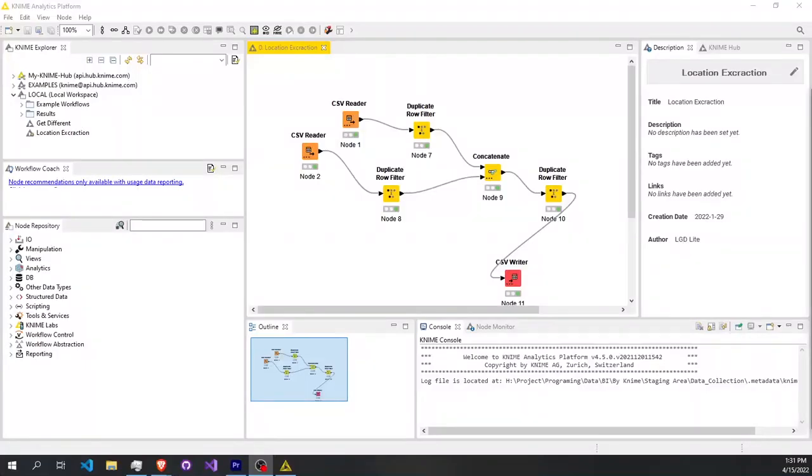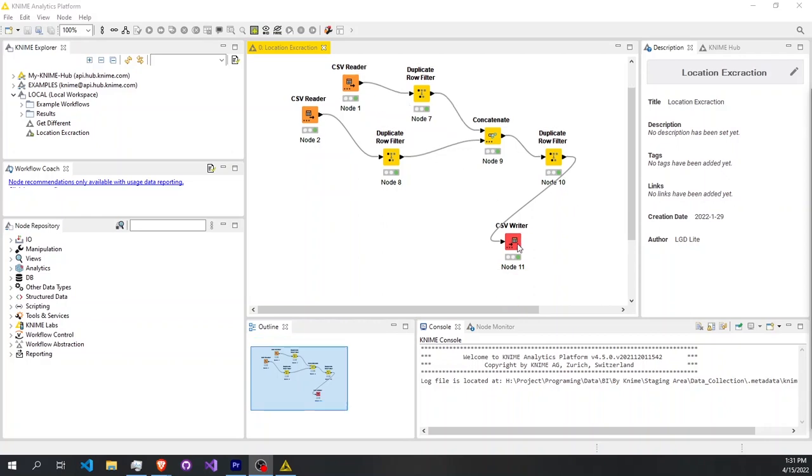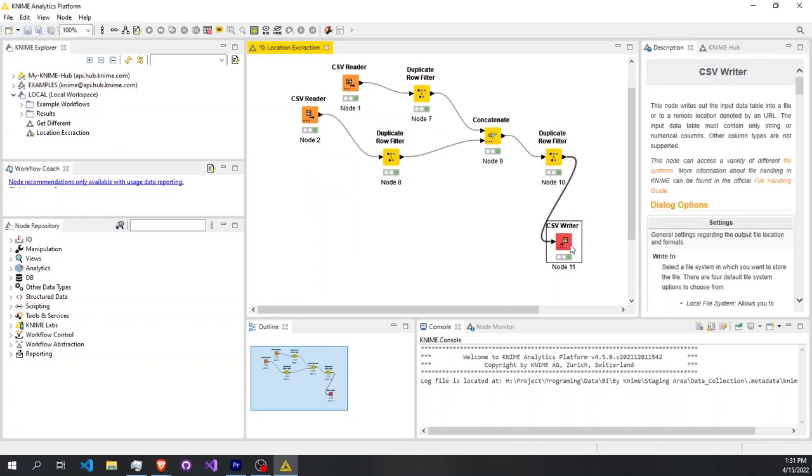I use Knime to generate these IDs. First, I use the CSV reader component to load the CSV files, then the duplicate row filter component to get the unique IDs, and finally the concatenation component to combine the two files into one result.